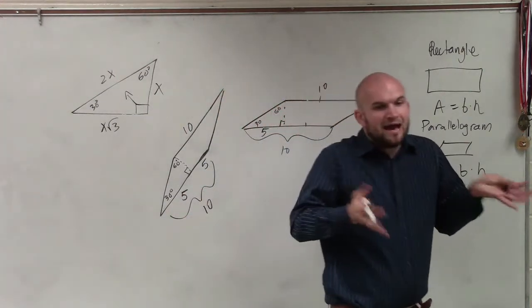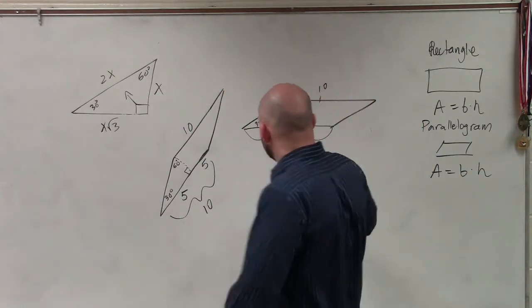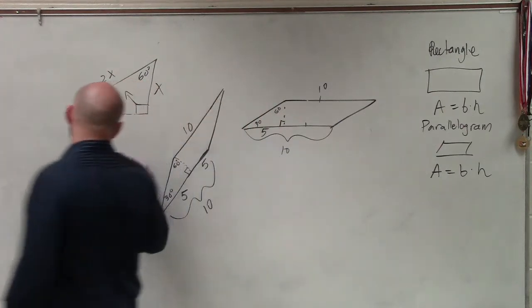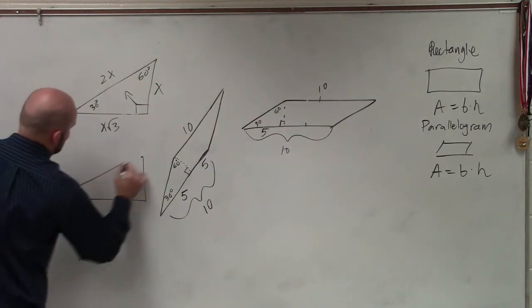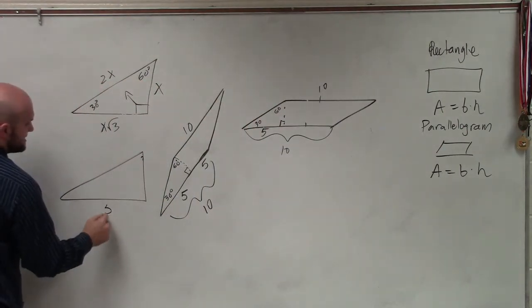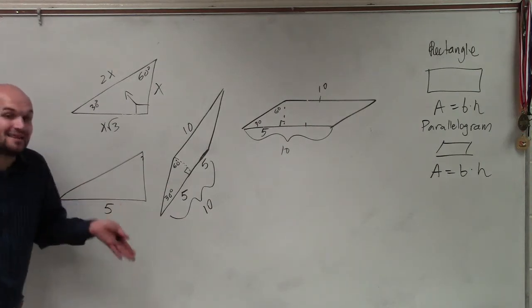Now, in this case, we don't have x. We actually have a number. In this case, we have the long leg is 5. So, same exact triangle. This is 5. Now, again, let's go back and review.